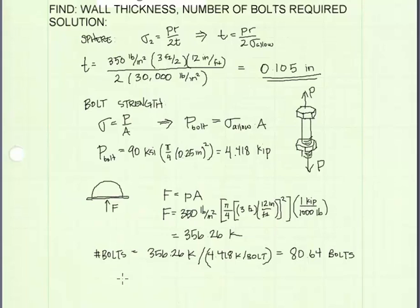And we can find the number of bolts we need by taking the force acting on the lid, 356.26 kips, and dividing that by the strength of a single bolt, which is 4.418 kips. And we get a value of 80.64 bolts.